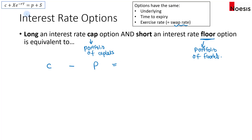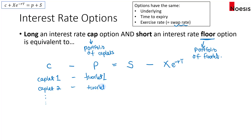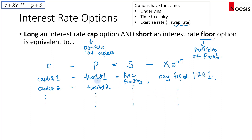Based on put-call parity, that would be equivalent to the underlying minus the risk-free bond. Don't forget that a cap is a portfolio of caplets, so there will be multiple caplets maturing at different times — caplet one, caplet two — and similarly floorlet one, floorlet two, and so on. For each long caplet and short floorlet, that would be equivalent to a receive floating, pay fixed FRA. And then there is the second and third and so on. So each combination of a long caplet and a short floorlet is equivalent to a receive floating, pay fixed forward rate agreement. With multiple forward rate agreements, that combination is equivalent to a receive floating, pay fixed interest rate swap.